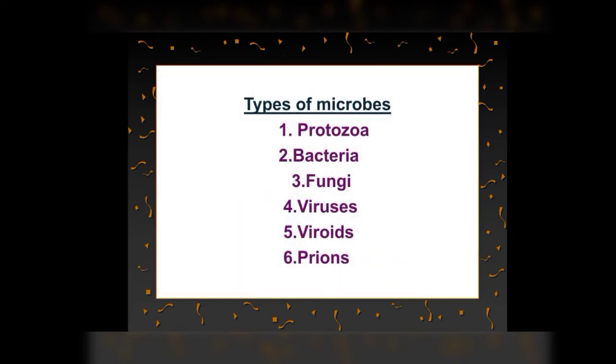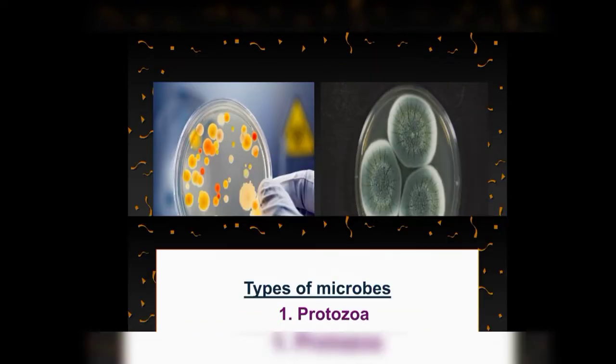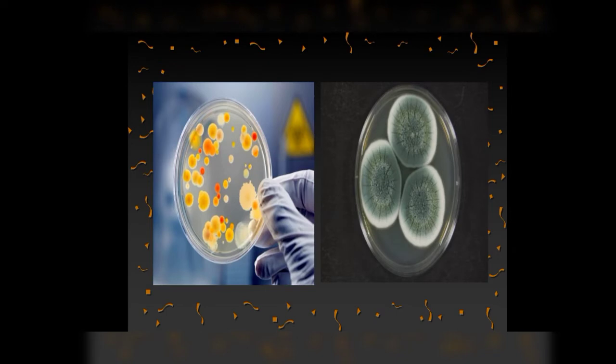Microbes are of several types: protozoa, bacteria, fungi, viruses, viroids, and prions. Microbes like bacteria and many fungi can be grown on nutritive media to form colonies that can be seen with the naked eye. Such cultures are useful in studies on microorganisms.